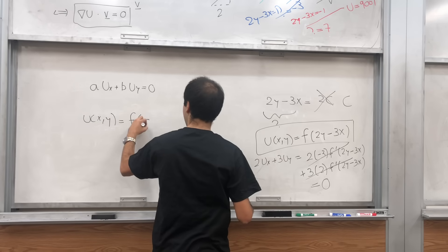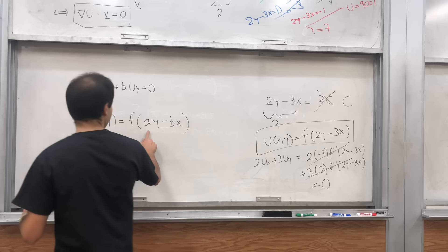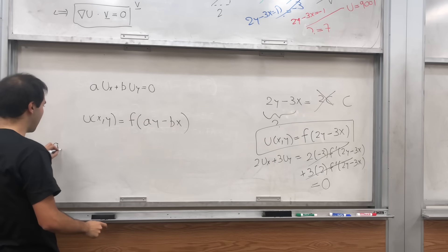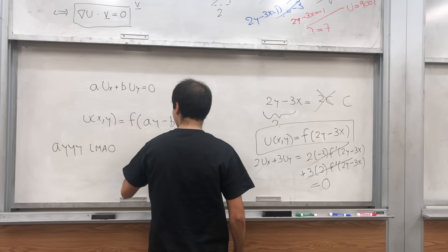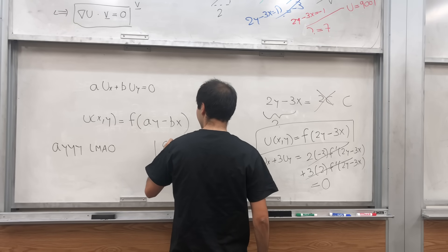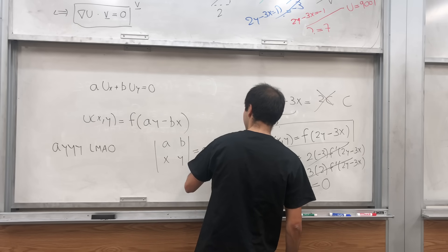Either you can think of it as a i l n a o. Or another way of thinking about this is simply think of the determinant of a b x y. And that's also ay minus bx.